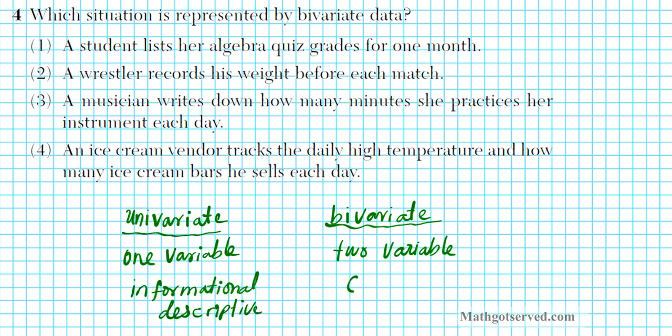But bivariate is used for comparison or analysis. This is basically looking for some kind of connection between two different variables. So let's see which is bivariate here. Option one, a student lists her algebra quiz grades for one month. The only data that's being collected here is her quiz grades. So this is univariate. If you're still confused as to what the correct answer is, ask yourself, what is she comparing this data with? Nothing else. It's just informational purposes. A wrestler records his weights before each match. This is univariate. Only one variable here, which is the weight. Is he comparing his weight with anything? Doing any comparisons? The answer is no.